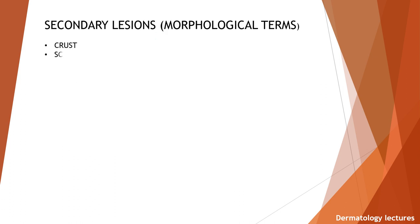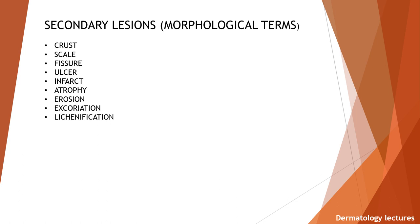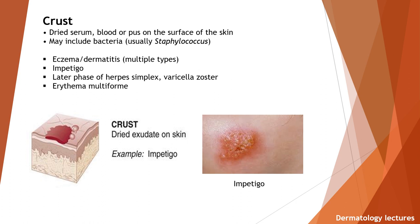Now we will discuss secondary lesions and their morphological terms: crust, scale, fissure, ulcer, infarct, atrophy, erosion, excoriation, and lichenification. What is a crust? It is a dried exudate on a skin surface of serum, blood, or pus. May include bacteria, usually staphylococcus. Examples are eczema or dermatitis, impetigo, later phase of herpes simplex, varicella zoster, and erythema multiforme. Here you can see the honey-colored crust of impetigo on the surface of the skin.